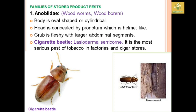The stored product pest family Anobiidae comprises woodworms and wood borers. An example is the cigarette beetle, Lasioderma serricorne, which is a serious pest in tobacco factories and cigarette storage areas. The body is oval or cylindrical in shape, and the head is concealed by the pronotum, giving a helmet-like structure. The grub is fleshy in the lower abdominal segments.